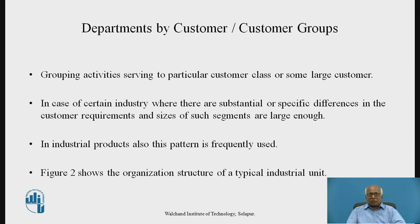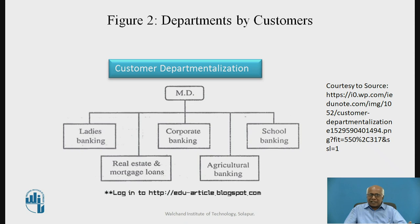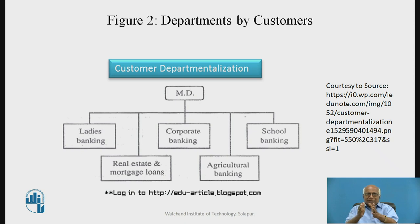Figure 2 shows the organizational structure of a typical industrial unit using departmentation by customer — specifically for a banking or finance sector. Here, the MD has one division particularly dealing with ladies' banking and giving specialized schemes and services to them. Then real estate and mortgage loans — for example, HDFC, Housing Development Finance Corporation — is one department for that customer. Then corporate banking, serving only corporates; agriculture area; school banking — like that, according to customer class, the departmentation is done. This is customer departmentation.